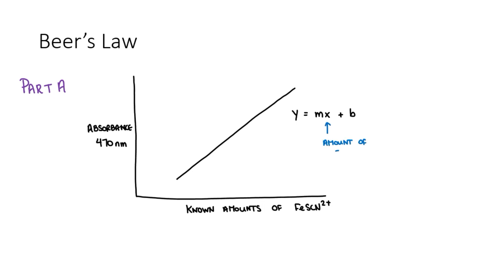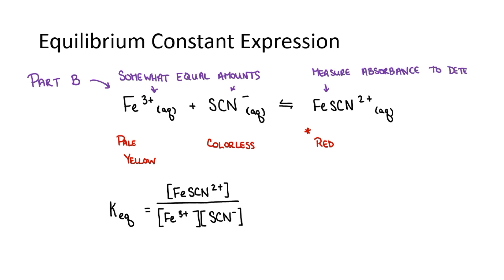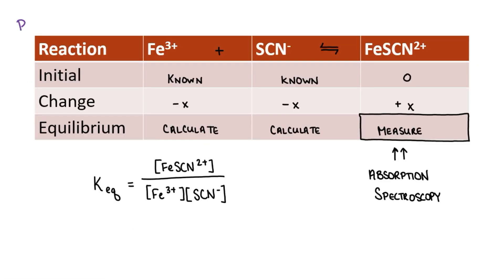Once we have a correlation, our reference work is done and we can begin testing unknowns. We can use measured absorptions along with the equation of our best-fit line to calculate the unknown concentrations. This brings us to Part B of the experiment — determining the equilibrium constant. We will mix almost equal quantities of iron 3-ion and thiocyanate ions, measure the absorbance at equilibrium, fill out our ICE table, and plug the equilibrium values into our equilibrium constant expression to calculate Keq.